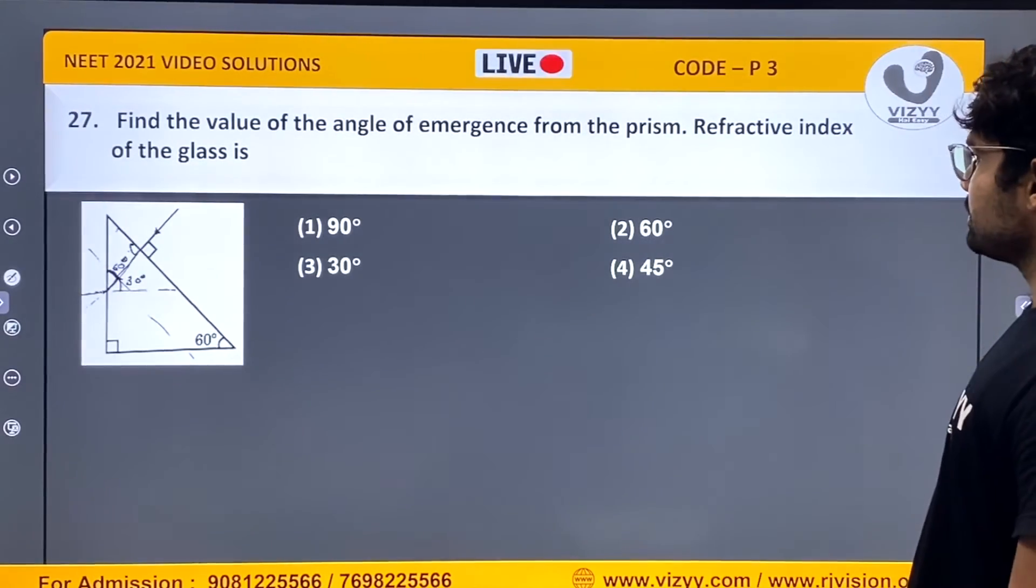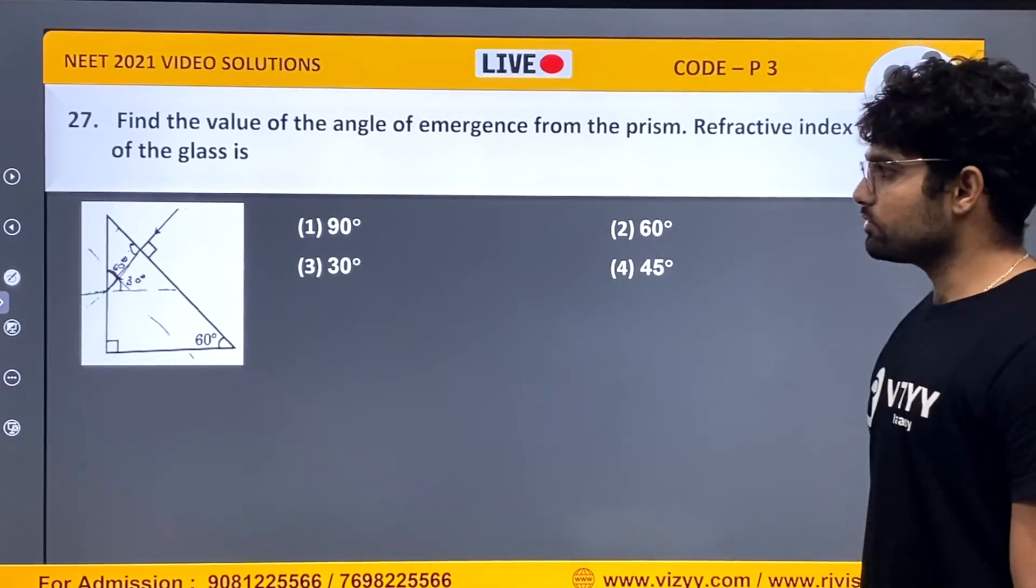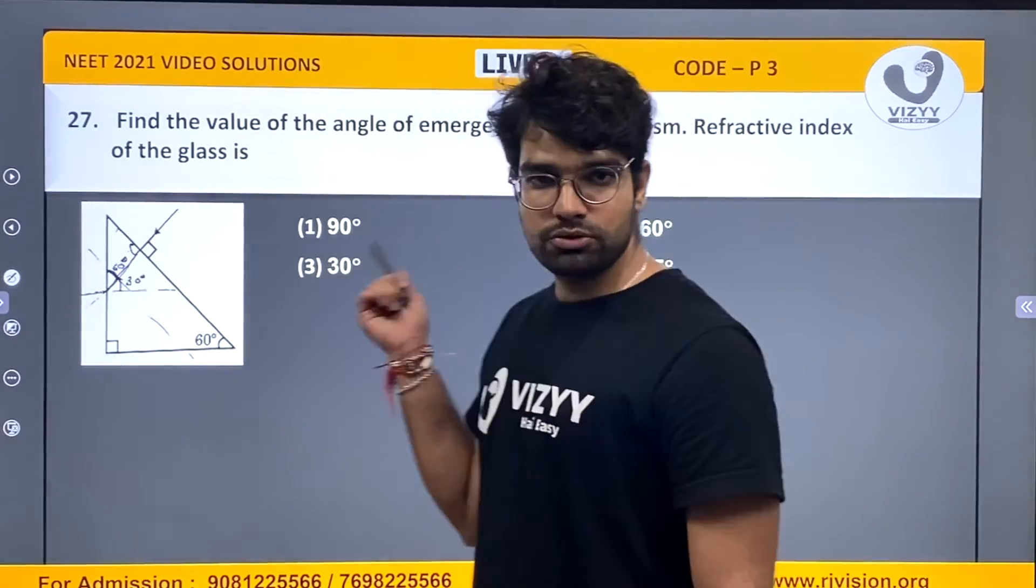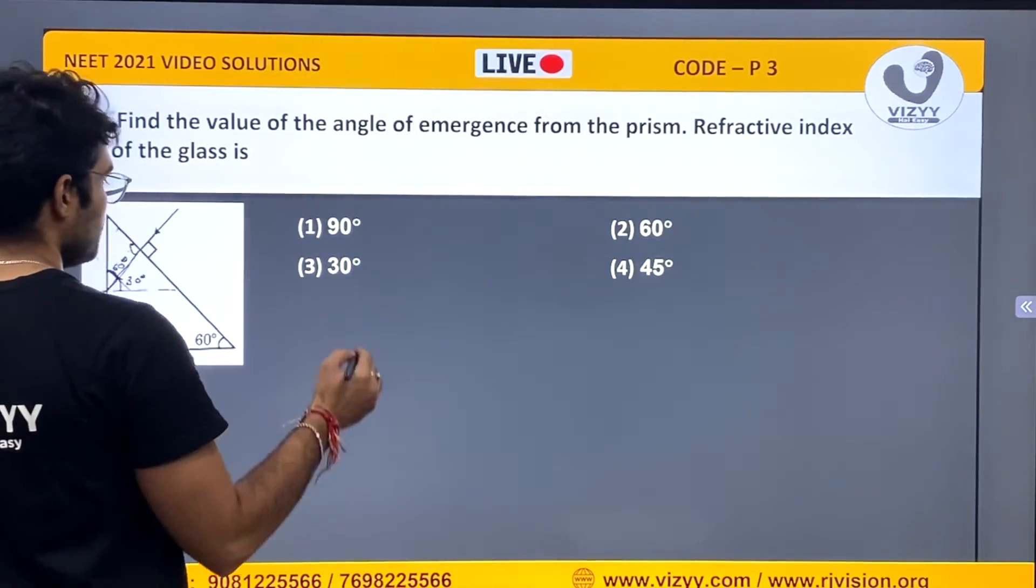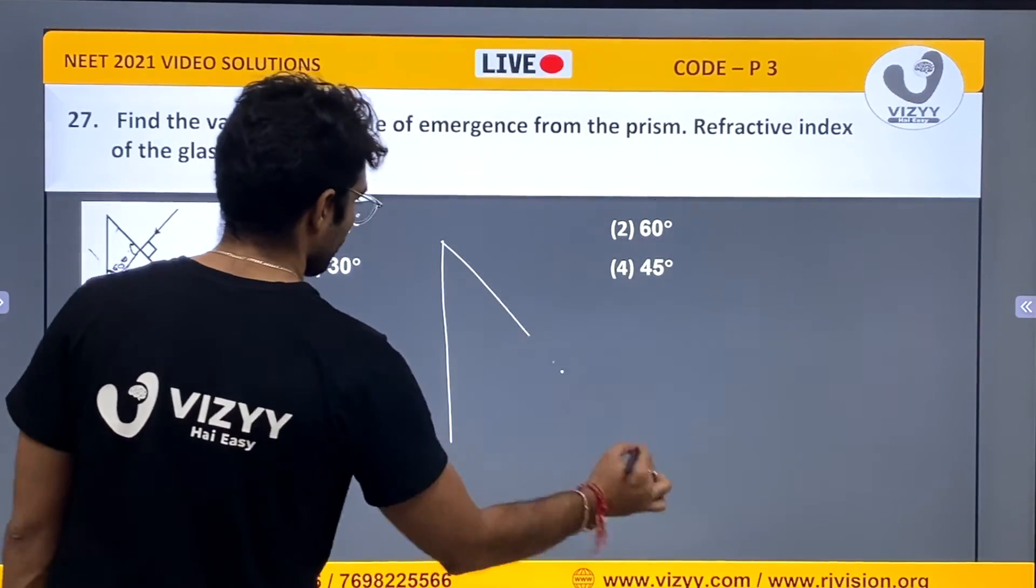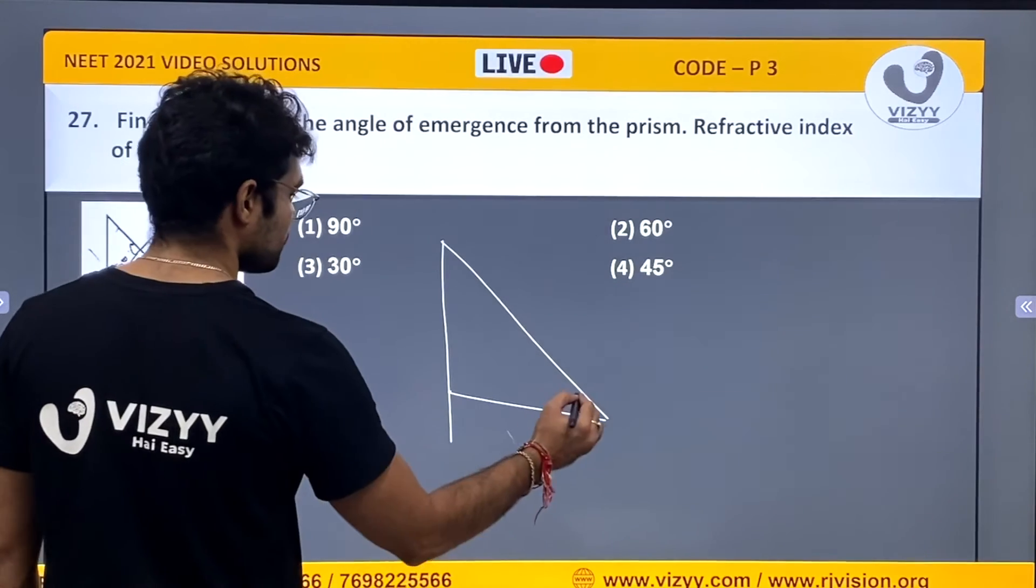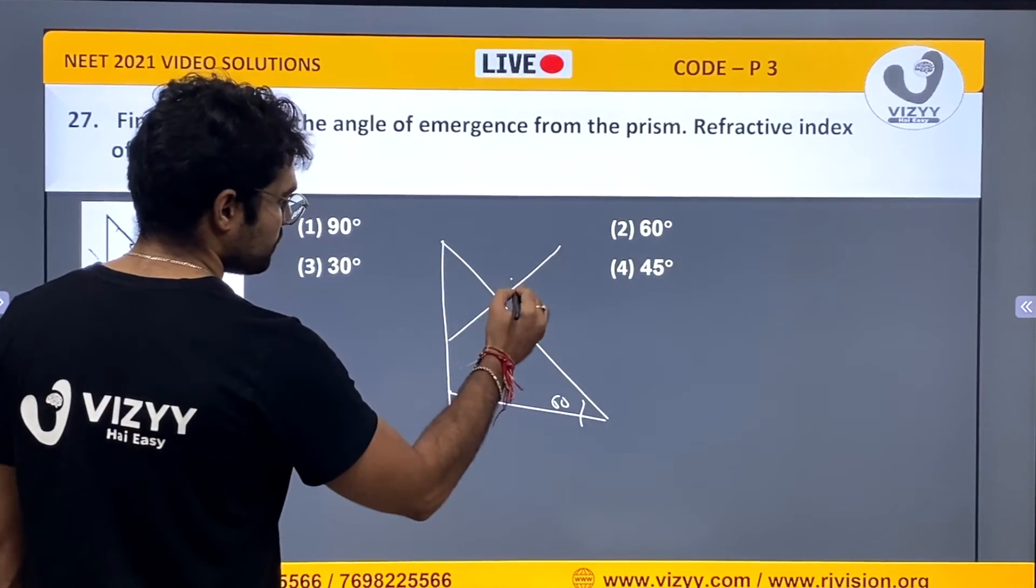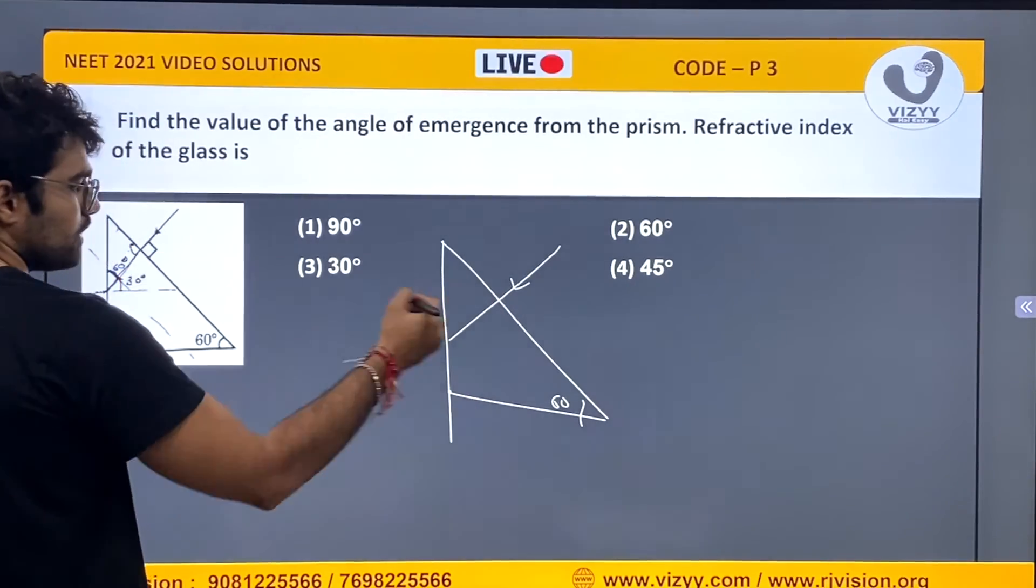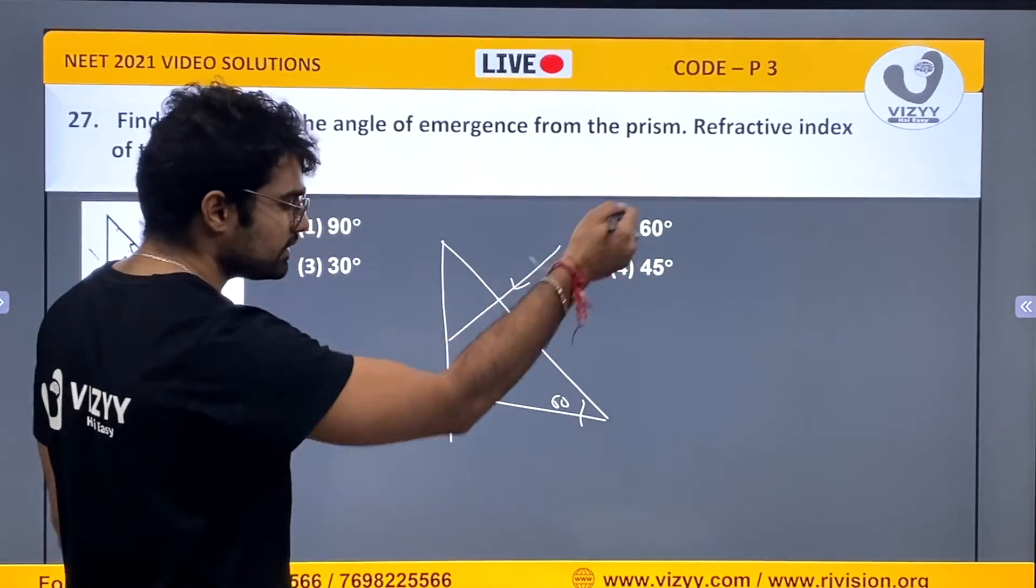Find the angle of emergence from the prism. The refractive index of the glass is root 3. This angle is 60 degree. Light is emerging. Light was there. But the normal incidence will go straight.